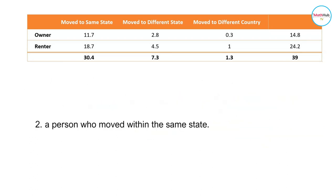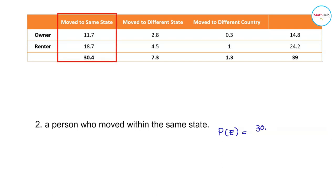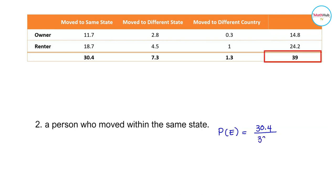Next, let's find the probability that a randomly selected American who moved was a person who moved within the same state. The probability is equal to 30.4 divided by the total number of possible outcomes, which is 39.0. This is approximately equal to 0.78.